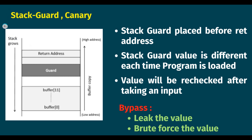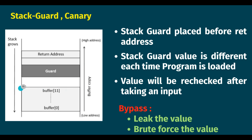Coming to stack guard or canary — what the compiler does is, whenever it allocates the stack frame for a particular function, it will push the stack guard value after the return address. The stack guard is a random value; it will be different every time we run the program, so it is not guessable. After taking input from the user, the compiler will recheck this guard value. If it is not the same as before, it will throw an error as 'stack smashed.' So even though we overrode the return address, we cannot redirect the control flow as we want. This is how the compiler adds extra protection for buffer overflow vulnerability using canary.